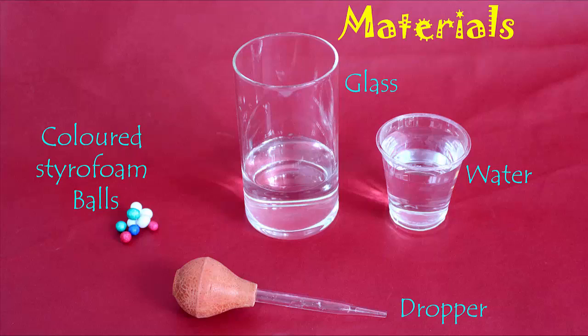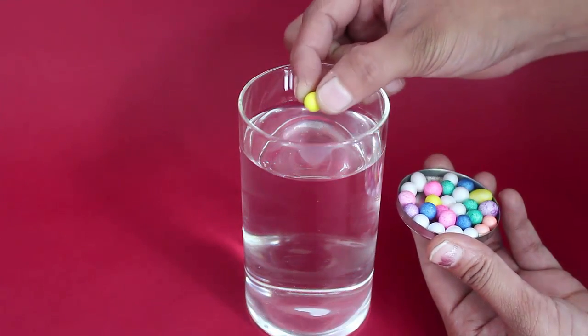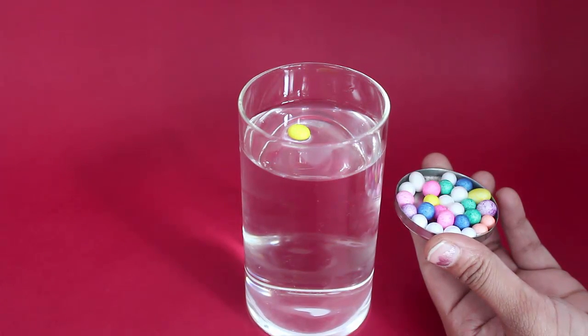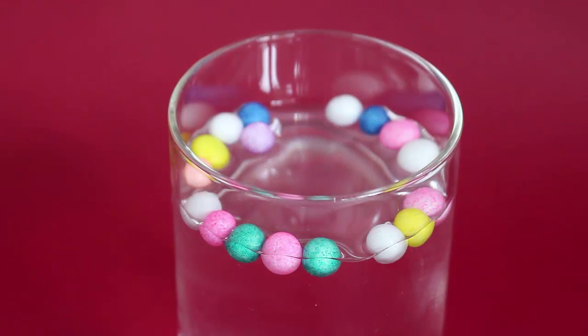First let's take a half filled glass of water. When we drop a small styrofoam ball in the center, it immediately tries to move towards the edge. When we put a lot of them, they all end up at the edges making a nice ring around the edge.